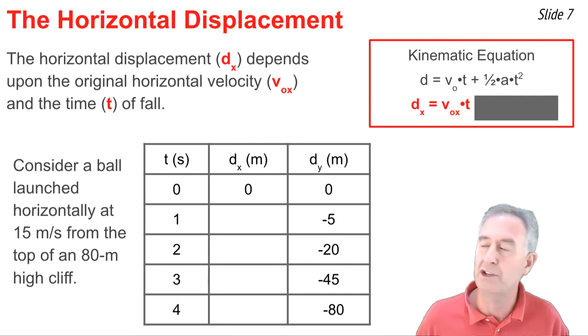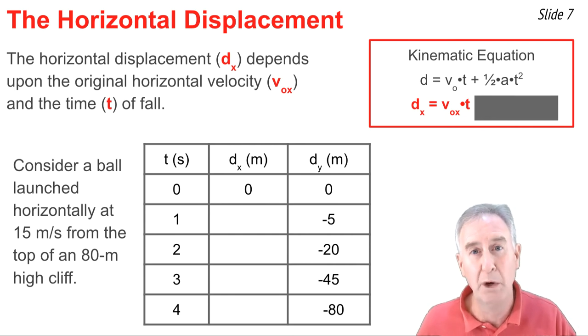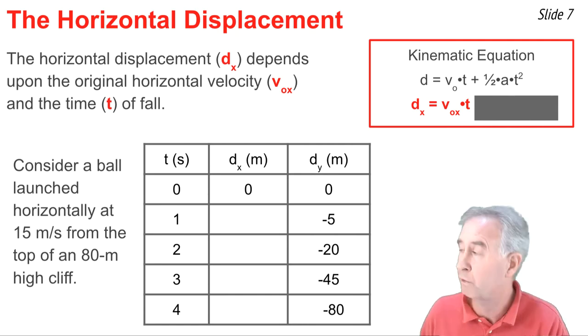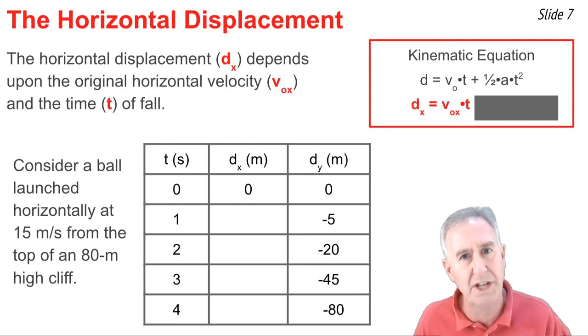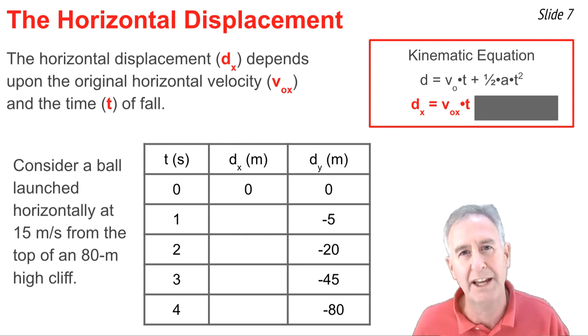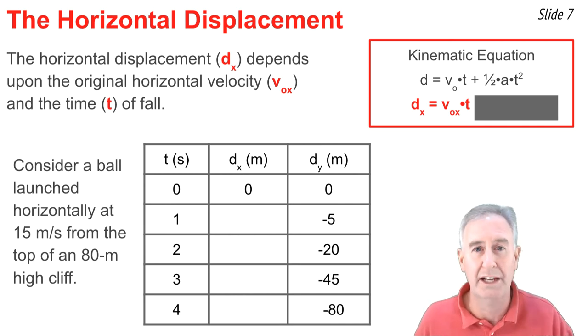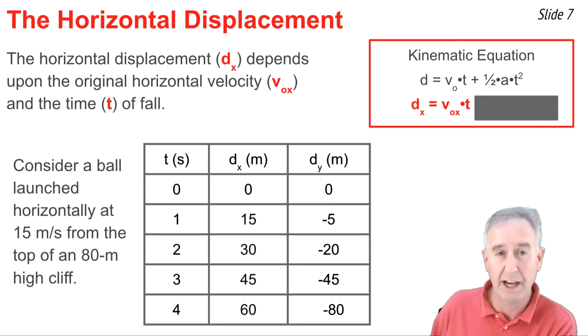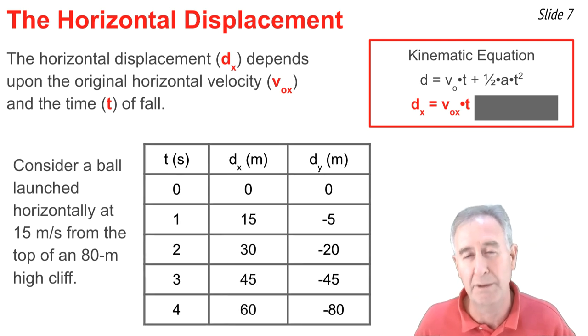Let's use the equation to analyze this. Consider a ball launched horizontally at 15 m/s from the top of an 80 meter tall cliff. We just learned the magic number 80 meters means that it would take four seconds to hit the ground. So in the data table, we're going to calculate the d_x value for one, two, three, and four seconds. To do it for one second, we just have to go 15 m/s times one. For two seconds, 15 times two, three seconds, 15 times three, and for the last row, we go 15 times four. It gives us these values for the horizontal displacement of the projectile.